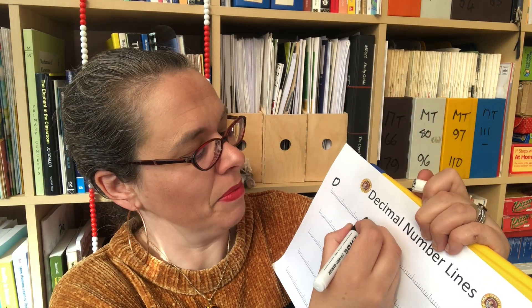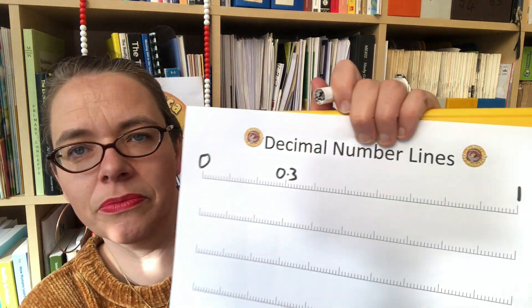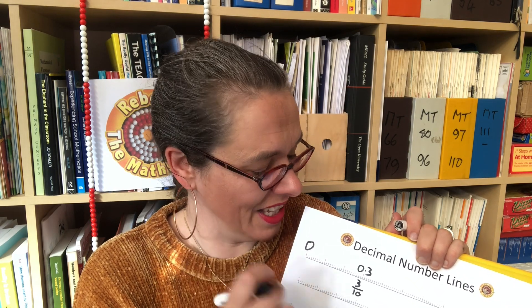We want a child to be able to see the tenths still and be able to notate that as 0.3 and so on. And of course we can put some fractions underneath so that we keep that link developing. Because you're working one-to-one with a child, you can really check their understanding — are they getting this? Can they do the next bit themselves? You get that great instant feedback.